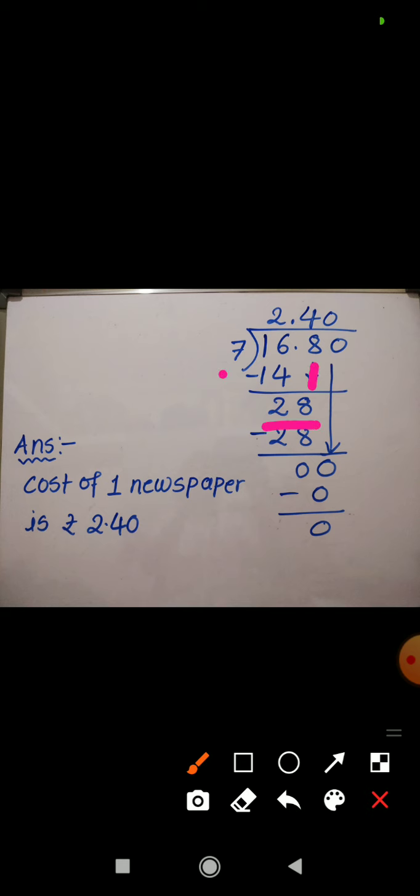Let us divide 28 by 7. 7 fours are 28. And 28 minus 28 is equal to 0. Then the last digit that is 0 will come down. Now 0 is less than 7. So how many times 7 goes into 0? 0 times. 7 into 0? 0. And 0 minus 0? 0. Here the quotient is 2.40.